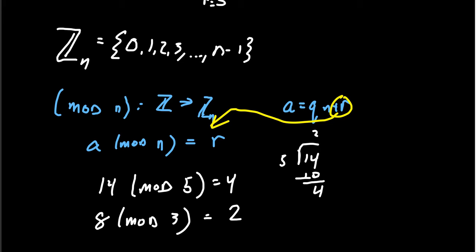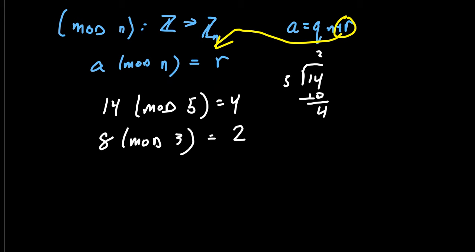The result of a modular calculation is always a number between 0 and one less than the modulus. When working mod 5, your answer must be 0, 1, 2, 3, or 4. When working mod 3, your answer must be 0, 1, or 2. Those are the only possible remainders. Also, the number you're modding doesn't have to be positive — the modulus has to be positive, but the input can be negative.